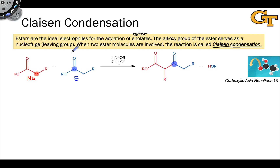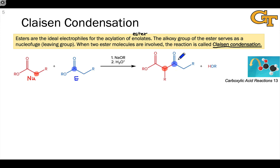In the product, we find a new bond between the alpha carbon of the nucleophilic ester molecule and the carbonyl carbon of the electrophilic ester molecule. From the electrophile's perspective, this looks like nucleophilic acyl substitution. And from the nucleophile's perspective, this looks like the substitution of a hydrogen by an acyl group, which we might call acylation of the alpha carbon.